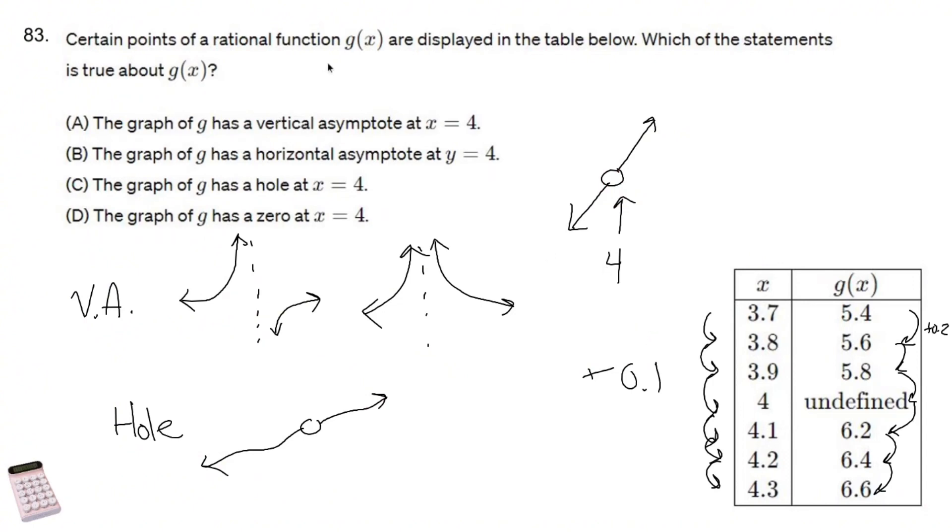Okay, so not a vertical asymptote, not a horizontal asymptote. Yes, a hole, and not a zero. If it was a zero, this would say zero.